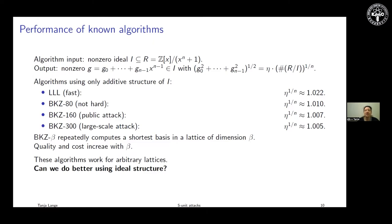This is not a generic lattice — this is an ideal lattice using the cyclotomic ring. I've already shown in defining the Minkowski embedding what the relationship is. But the question is: can we use knowledge about the number theory to gain more information?